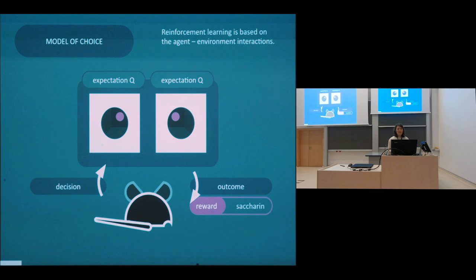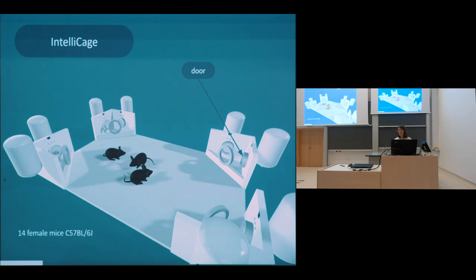Most of our experiments are performed in the IntelliCage, which is basically a big plastic box with four chambers, each located in different corners of the cage. We put 14 female mice inside it, set the procedure on, and note all the actions an animal performed. The beverages are stored in bottles, and for a mouse to access it, she must first visit the corner, then the inner door must get opened, and only then she can access the bottle.